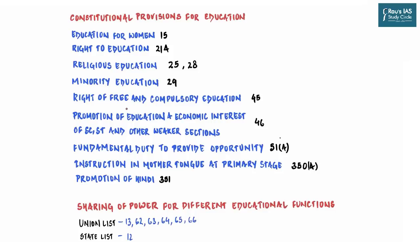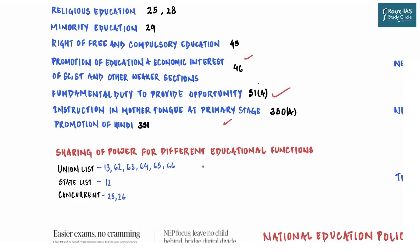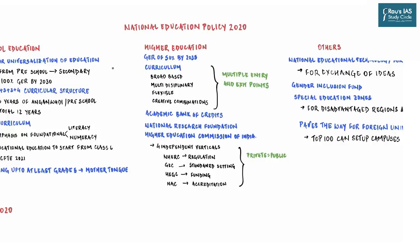We shall first cover the constitutional provisions related to education, starting with fundamental rights, directive principles of state policy, fundamental duties, and the section of special directives. Then we will understand the administrative setup — the division of education-related items between the Union and the states. Finally, we will cover the important provisions of National Education Policy 2020, dealing with reforms in school education, higher education, and other announcements that cannot be categorized into either.